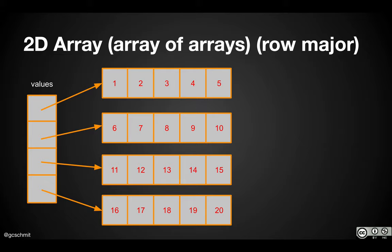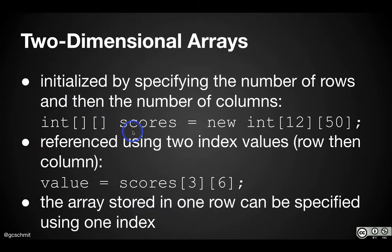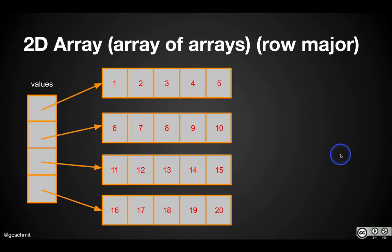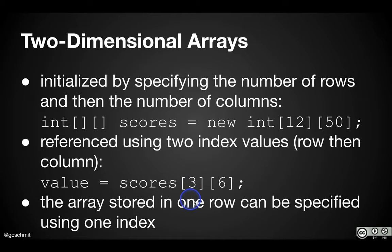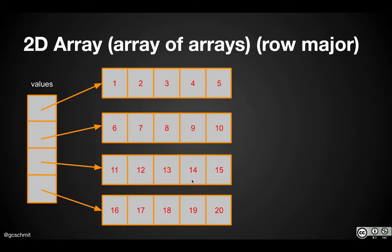Pretty much everything we do in this class, we're going to build our arrays where we first specify the number of rows and then the number of columns, and we index based on row and column. This has a name you're expected to know — it's called row major. Think of row major as meaning the row comes first. The first thing we specify in square brackets is the row index.